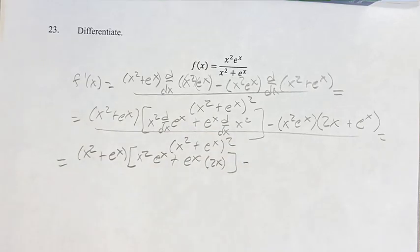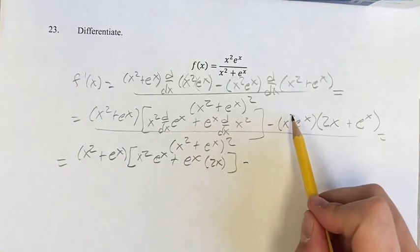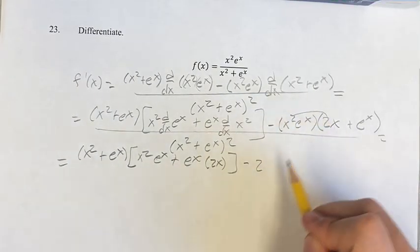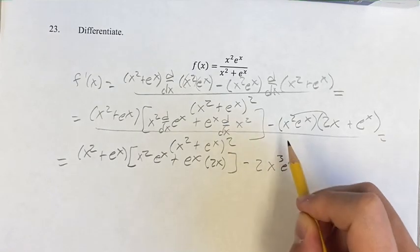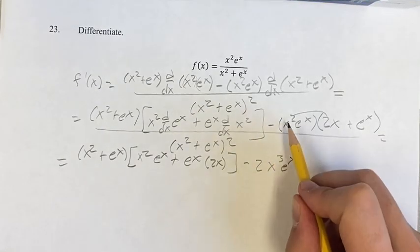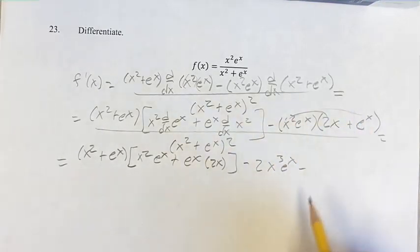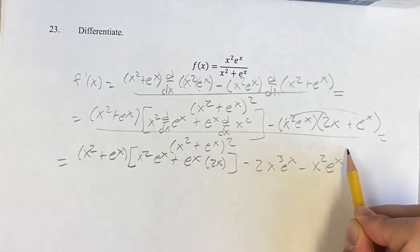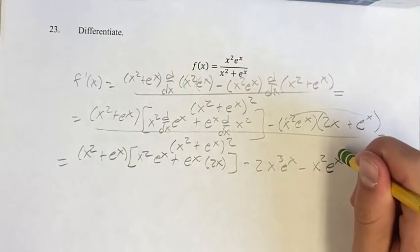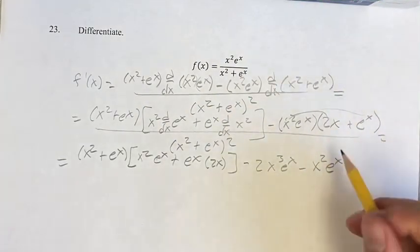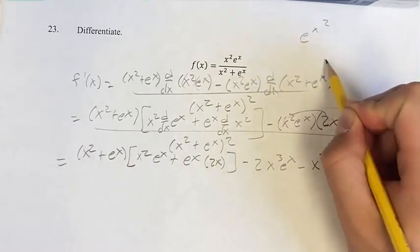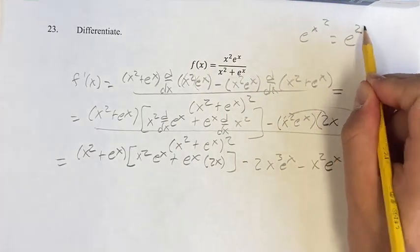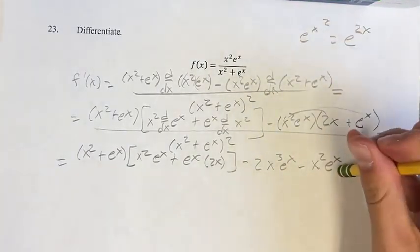In this, you're subtracting and distributing this out: 2x squared times x is x cubed e to the x, minus x squared e to the x squared. So e to the x squared — to simplify that, you multiply these two and you get e to the 2x.